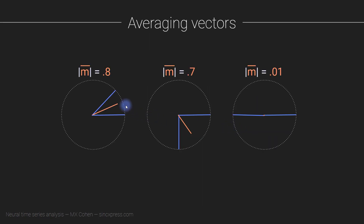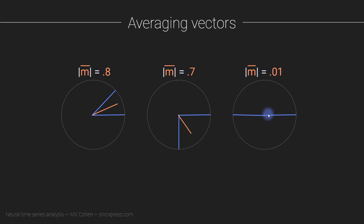The key concept is that when the individual angles are close together — when they are clustered — the average vector is going to be longer. When the individual vectors are more distributed, with angles more spread out, the average vector is going to be shorter. You can see three pairs of angles in blue and their averages in orange. The closer the angles are to each other, the longer the average vector. When two vectors are almost 180 degrees apart, the length of the average is very short.